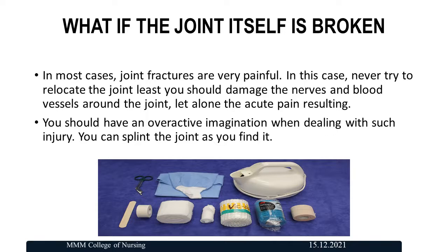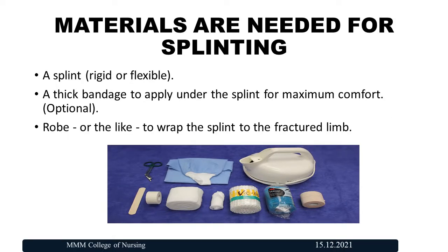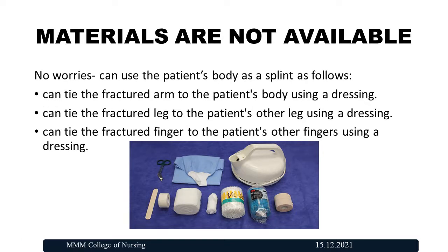If the joint itself is injured, joint fractures are very painful. Never try to relocate the joint, as you may damage the nerves and blood vessels surrounding it. Splint the joint as you find it. Materials needed for splinting include: a splint (rigid or flexible), thick bandaging, and rope or similar material to wrap the splint to the fractured limb. If materials are not available, you can tie the fractured arm to the patient's body using dressing, tie the fractured leg to the patient's other leg, or tie the fractured finger to the patient's other fingers using dressing.